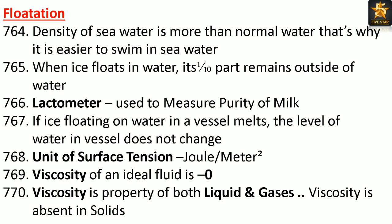Unit of surface tension: Joule per meter squared. Viscosity of an ideal fluid is zero. Viscosity is a property of both liquids and gases. Viscosity is absent in solids.